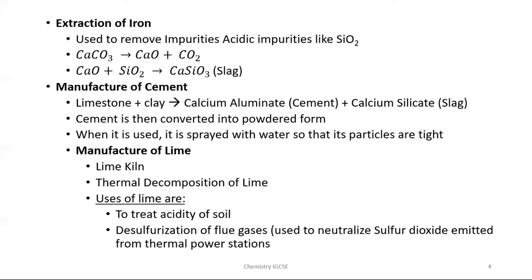In the extraction of metals like iron, calcium carbonate is used again. It is also used in the manufacture of cement: limestone plus clay gives calcium aluminate and calcium silicate, which we call cement.